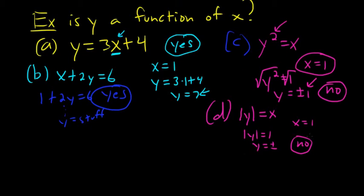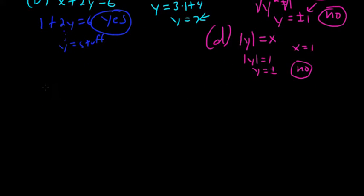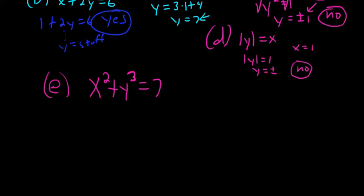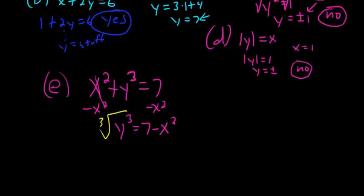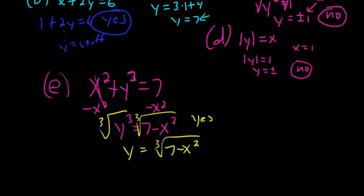Pretty much, for everything we're going to be doing, it's always going to be yes, unless you have y to an even power or an absolute value of y. For example, x² + y³ = 7: you subtract x², get y³ = 7 − x², then take the cube root to get one y value, so the answer is yes. Generally, it's always yes unless you see y to an even power.